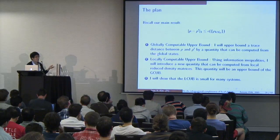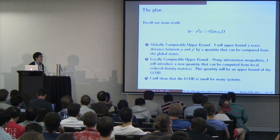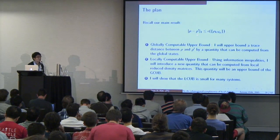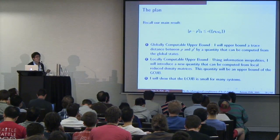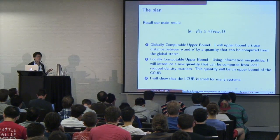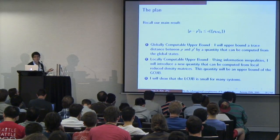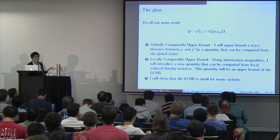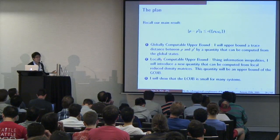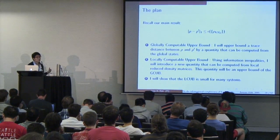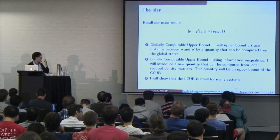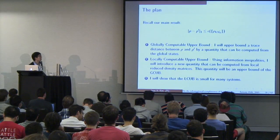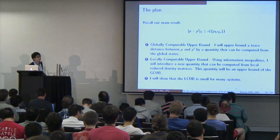The strategy is very simple, at least in the broad sense. First, I will compute a globally computable upper bound — meaning I'll upper bound the difference between these two states in terms of some function that depends on rho and rho-prime. Obviously at this point I haven't done anything very useful, because in order to compute this upper bound I need to actually know rho and rho-prime. This leads to the second point: I'll obtain a weaker bound that has the virtue of only depending on the set of local reduced density matrices, not the global state.